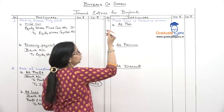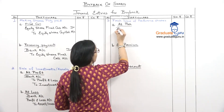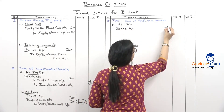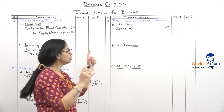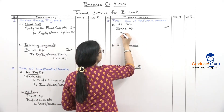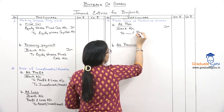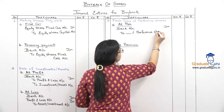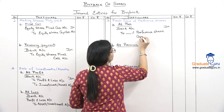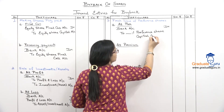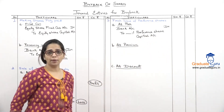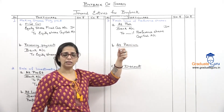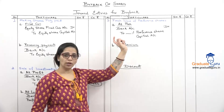So what will our entries be? Obviously you are issuing shares and getting money, so: Bank Account — Debit. And here there is no premium, no discount, so directly: To [X]% Preference Share Capital Account — Credit. The percentage refers to the fixed rate of dividend on preference shares. In the sum, whatever percentage is given, we will put that here. It will not affect my calculation anyway.